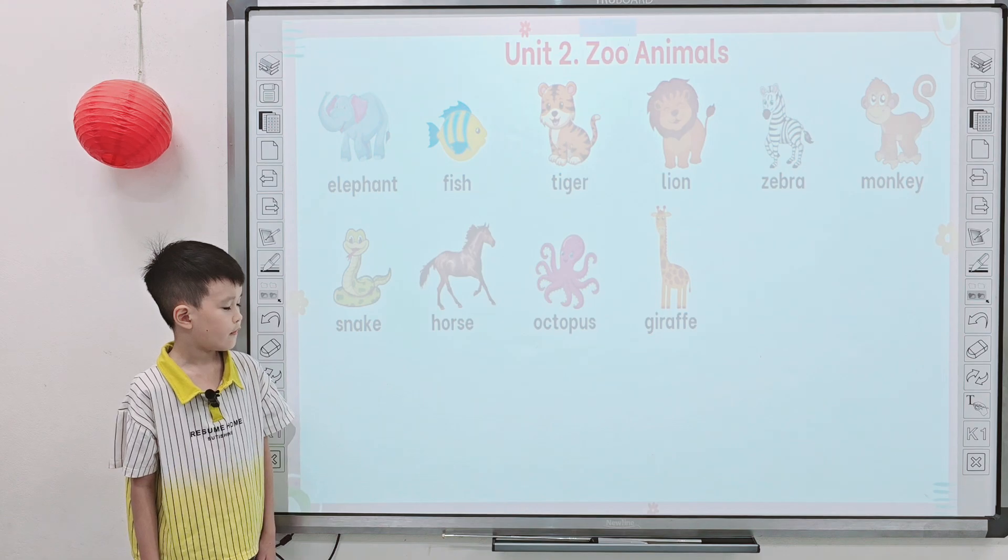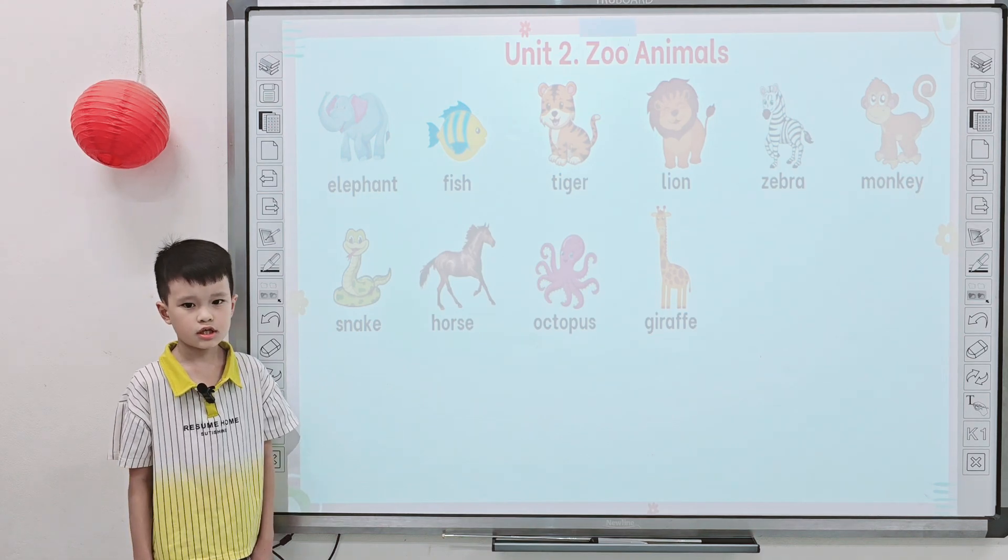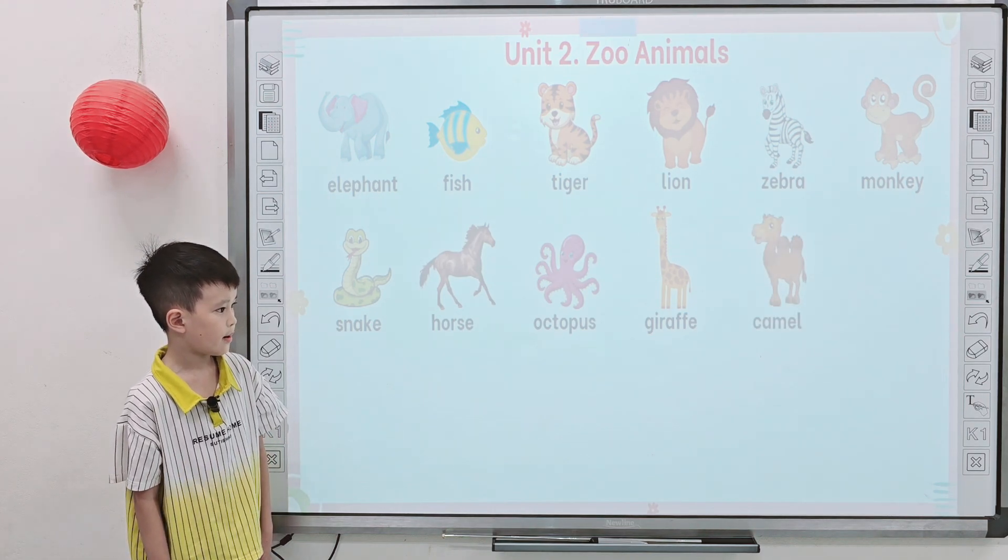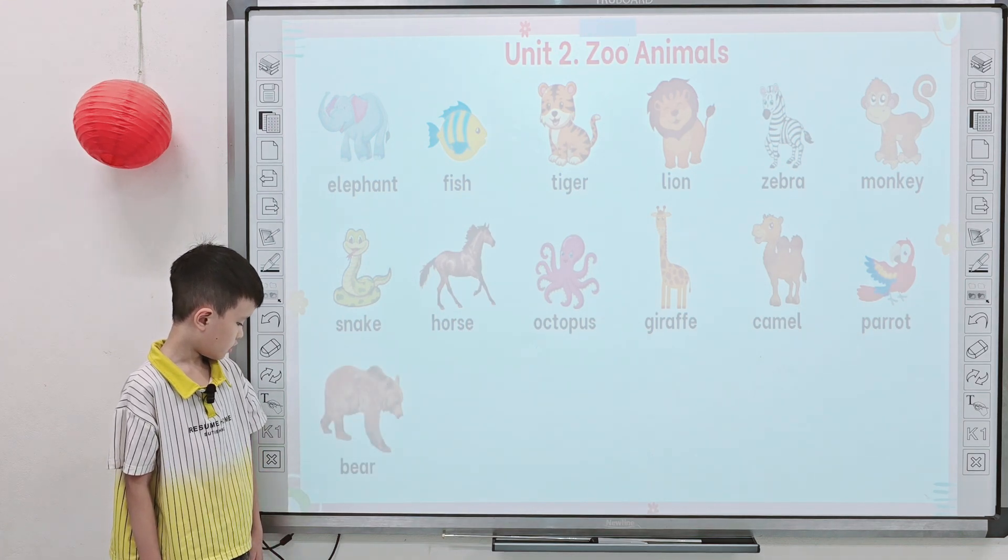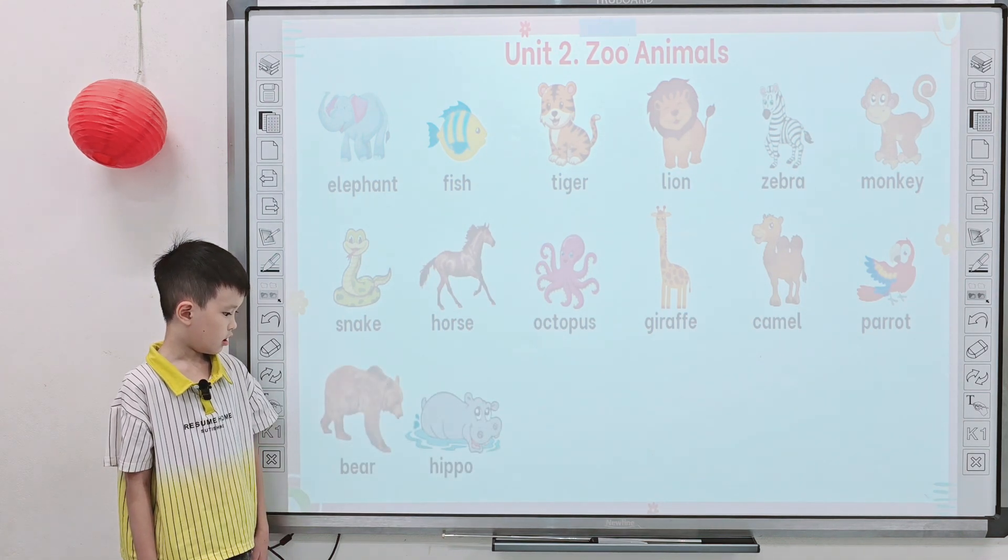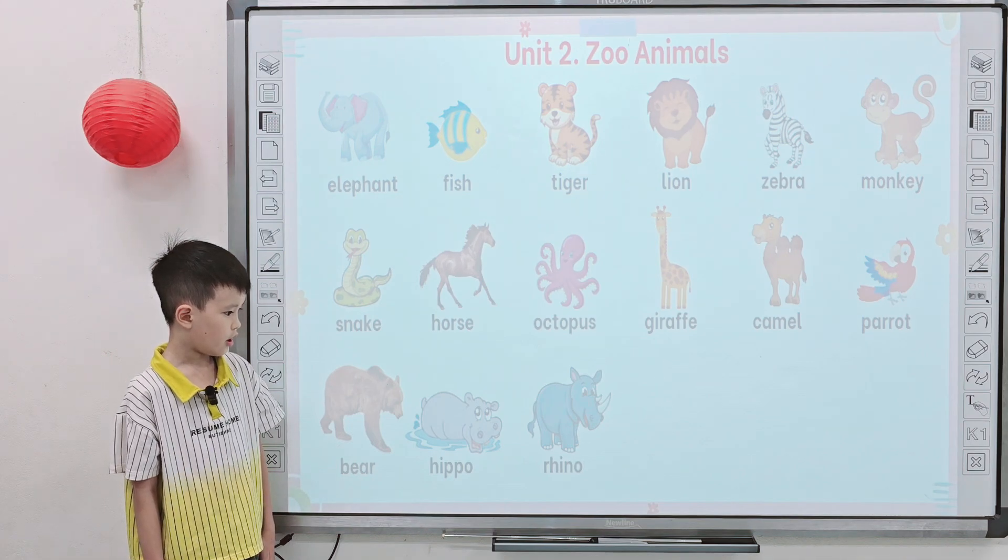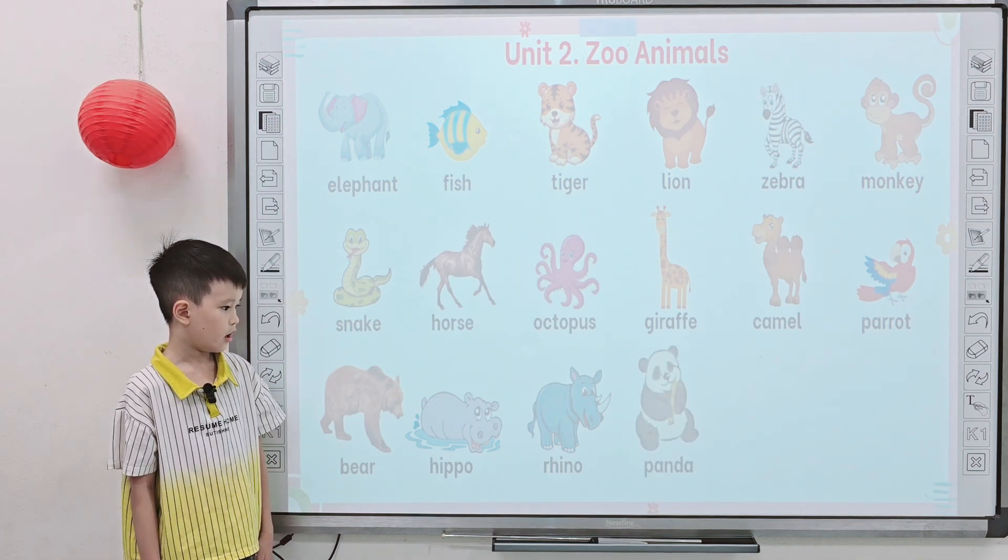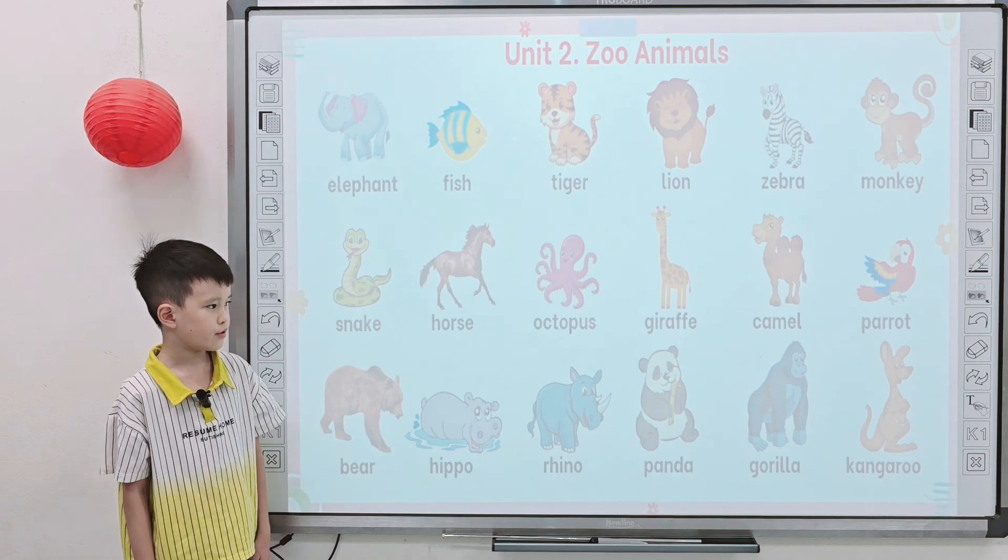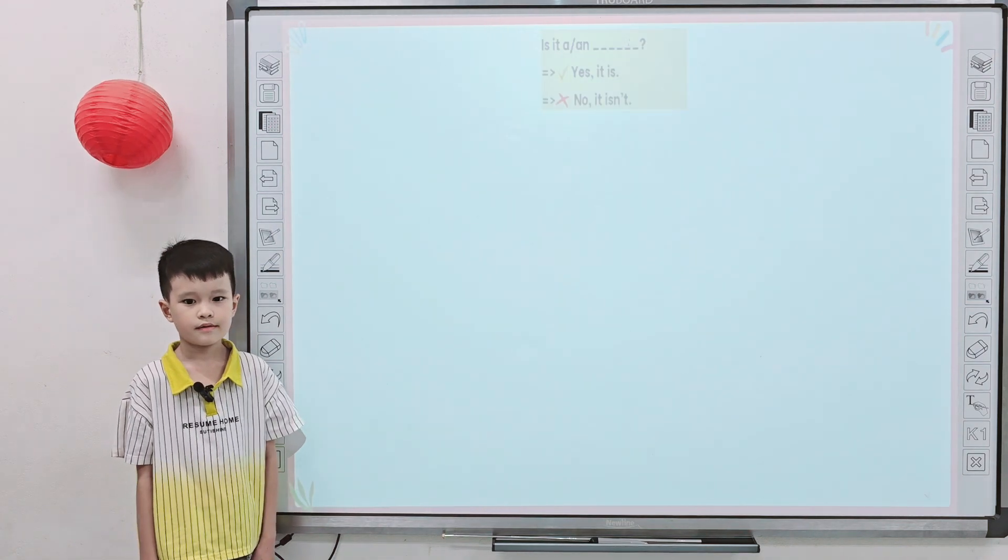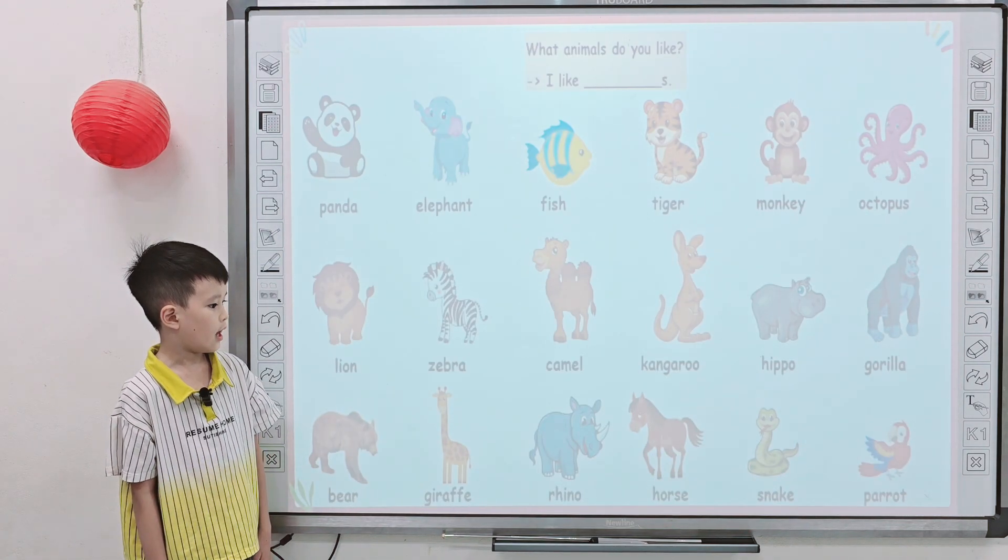It's an octopus, it's a giraffe, it's a camel, it's a parrot, it's a bear, it's a hippo, it's a rhino, it's a panda, it's a gorilla, it's a kangaroo. Good job, my son. Tell me what animals do you like? I like parrot.